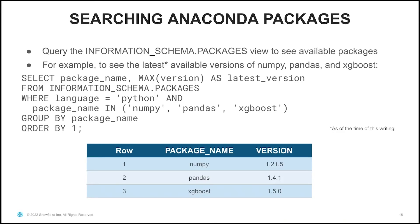When you want to create a Python UDF, you can query the information_schema.packages view to see a list of the available packages. As an example, if you want to see the latest available versions of NumPy, Pandas, and XGBoost, you can run a query like this. The output shown here was up to date as of the time of this writing but may have changed in the meantime. I'm selecting the package name and the latest version for each of the packages in this list, specifying the language as Python and looking at NumPy, Pandas, and XGBoost.